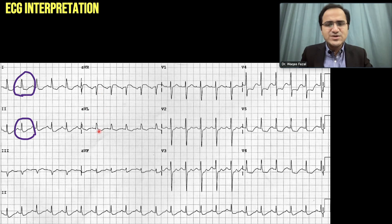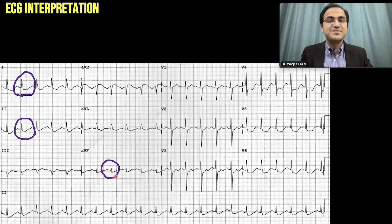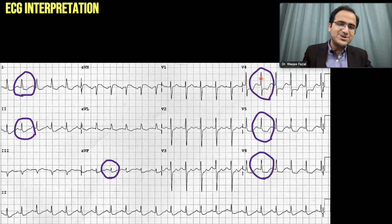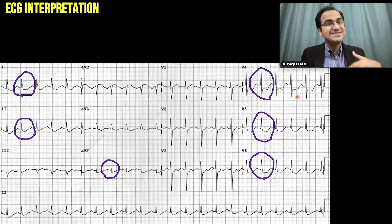AVL is showing somewhat depression but not very prominent. AVF is showing ST segment depression — compare the P wave, PR segment, and ST segment. V1, V2, V3 show no ST segment depression. V4, V5, and V6 show prominent ST segment depression. So this ECG indicates subendocardial ischemia with ST segment depression.